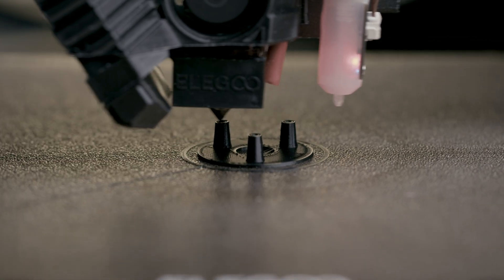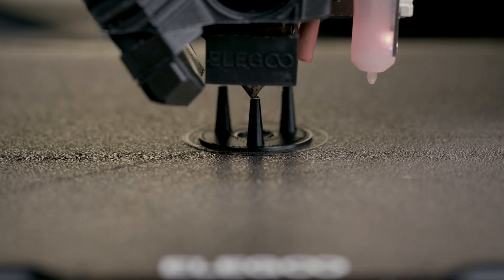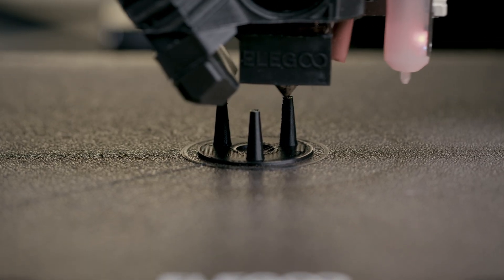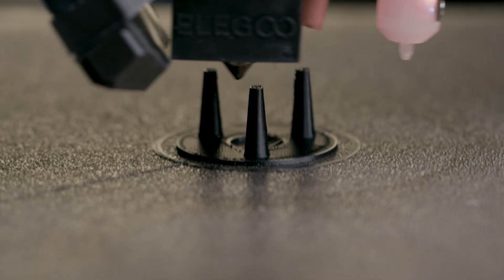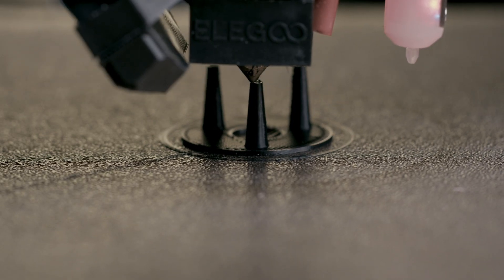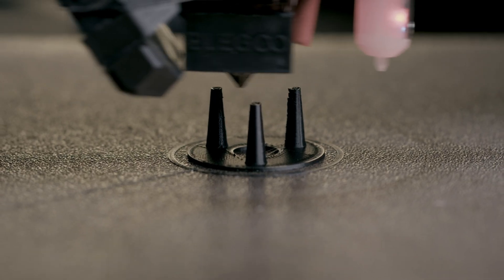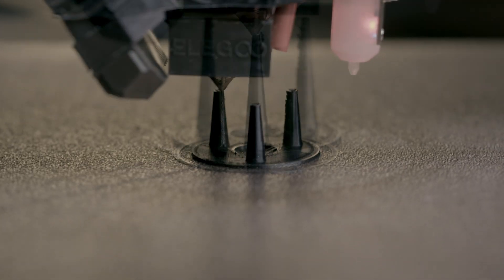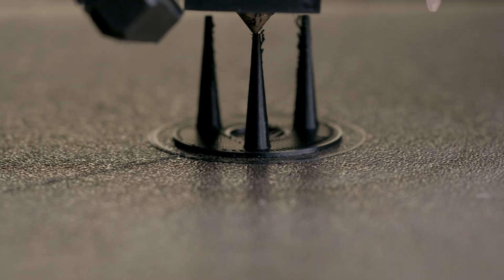Now I'm printing a stringing test. It's actually the first time to print one. One thing we need to do with the copperhead is reduce the retraction distance about two or three millimeters. This is to prevent hot filament from getting pulled into the cold area of the heat break. If you don't change your retraction, your extruder is probably going to start skipping. I also didn't do a PID tune. Later I should check it.